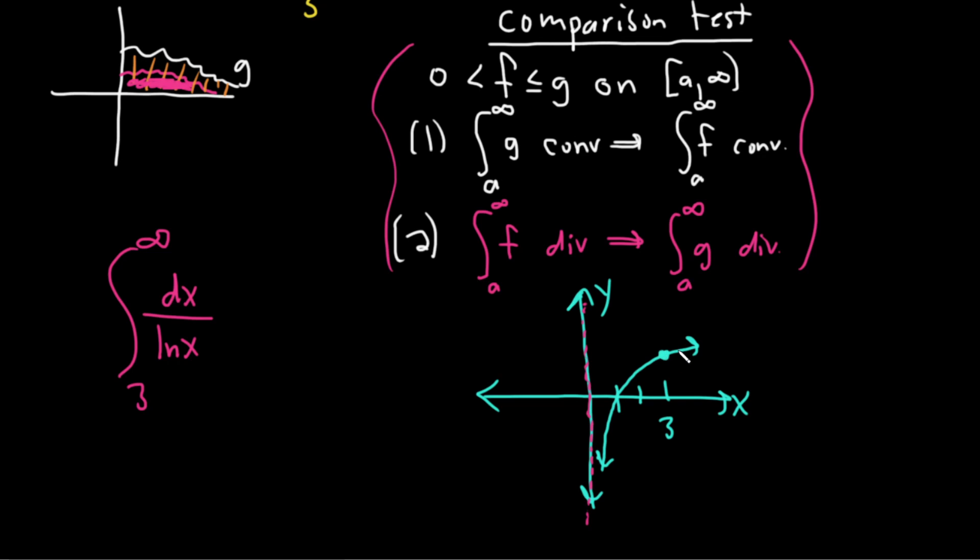So let's see, at 3, what is the value of the natural log of 3? It's like 1.0986, I don't mind, it's like 1.1, roughly something like that. I don't have a calculator within arm's reach. It's like 1.1.